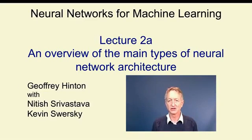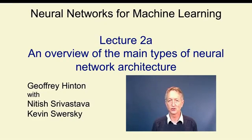In this video, I'm going to describe various kinds of architectures for neural networks. What I mean by an architecture is the way in which the neurons are connected together. By far the commonest type of architecture in practical applications is a feed-forward neural network, where the information comes in at the input units and flows in one direction through hidden layers until it reaches the output units.